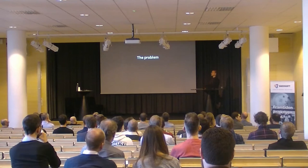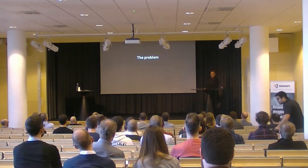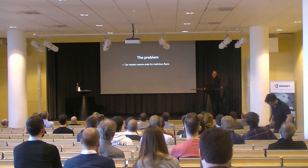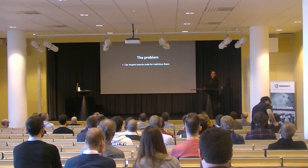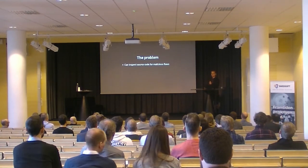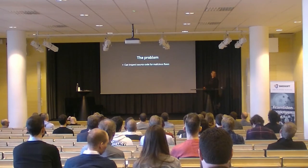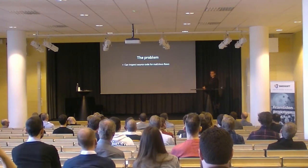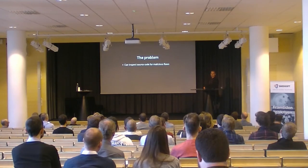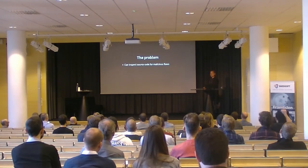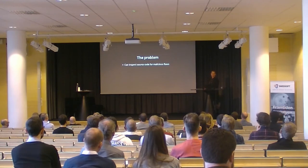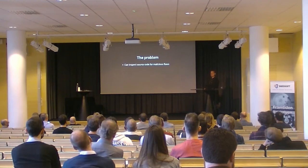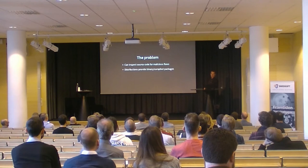So, reproducible builds. What problem are we actually trying to solve? For free software, you can inspect the source code. You can download the source code for Nginx, Apache, whatever you like, and look at it and see whether someone has inserted any malicious flaws — backdoors, or logic errors. Something that looks like a small bit of source code but really adds a rootkit, essentially.